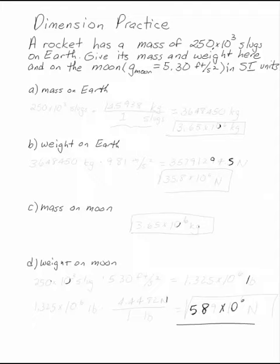First of all, we want to find the mass on Earth. To take the mass on the Earth, you need to change these 250 times 10 to the third slugs into SI units. So we need to change from slugs to kilograms. Slugs is the unit of mass in English units. Kilograms is the unit of mass in SI. There are 14.5938 kilograms in one slug.